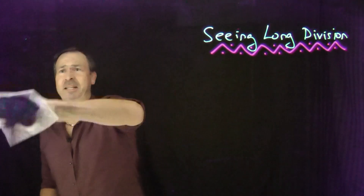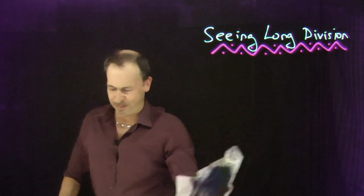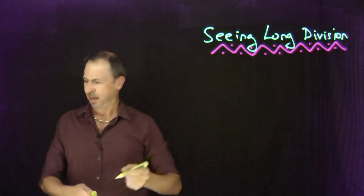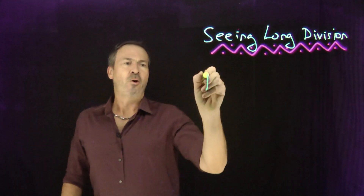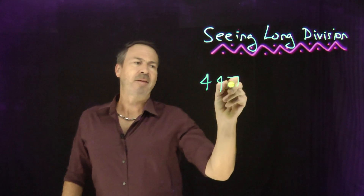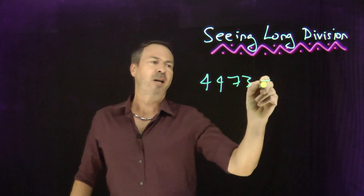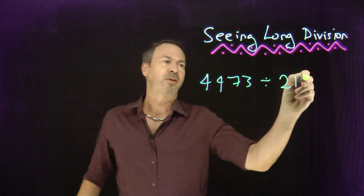Let's try multi-multi-digit division — something crazy like 4,473 divided by 213.